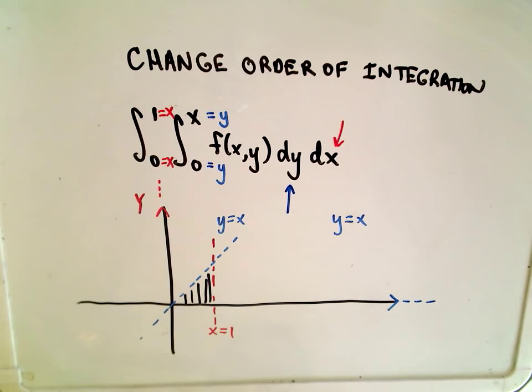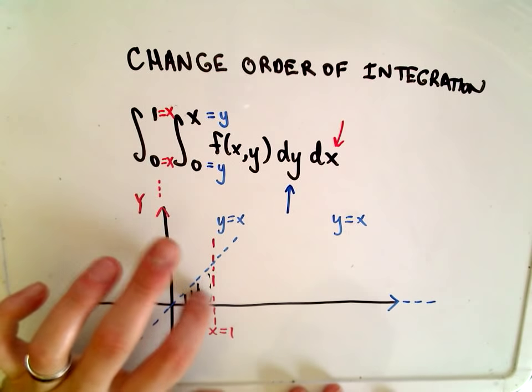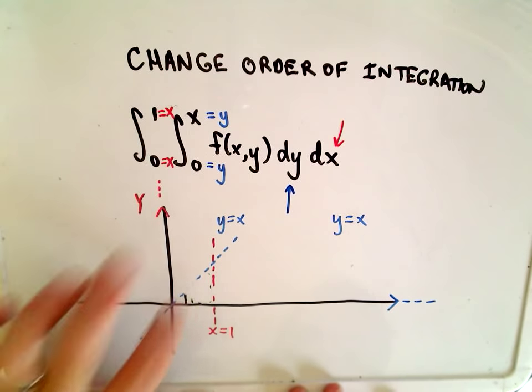Okay, so what we want to do is, again, we want to switch our limits of integration. So where we've got y first, or excuse me, x first and then y. And the way I like to think about it is just to kind of, in terms of the way it was originally written.